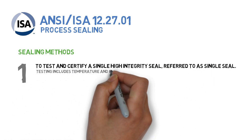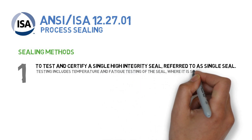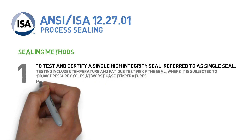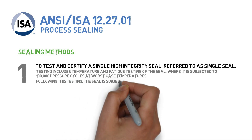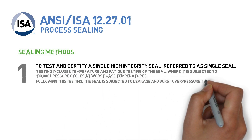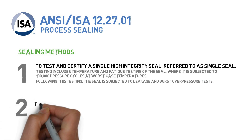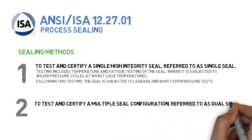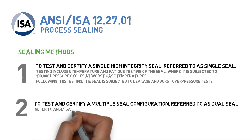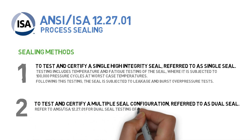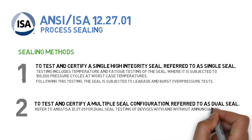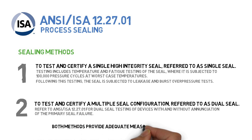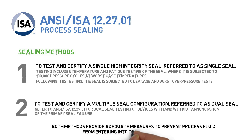Single seal testing includes temperature and fatigue testing of the seal, where it is subjected to 100,000 pressure cycles at worst case temperatures. Following this testing, the seal is subjected to leakage and burst over-pressure tests. The second method is to test and certify a multiple seal configuration, referred to as a dual seal. Refer to ANSI CSA 12.27.01 for dual seal testing of devices with and without annunciation of the primary seal failure. Both methods provide adequate measures to prevent process fluid from entering into the electrical system.